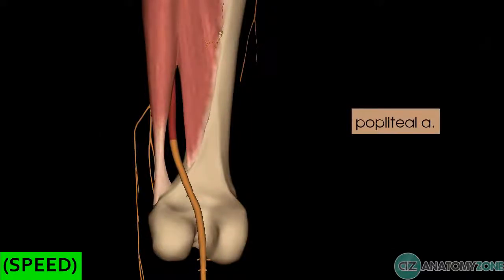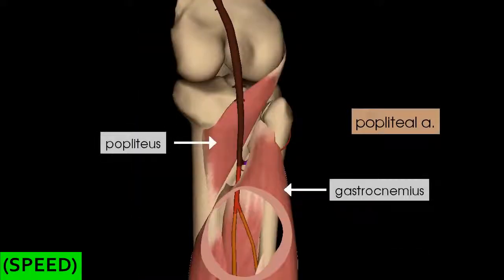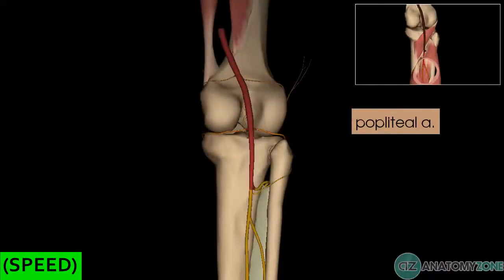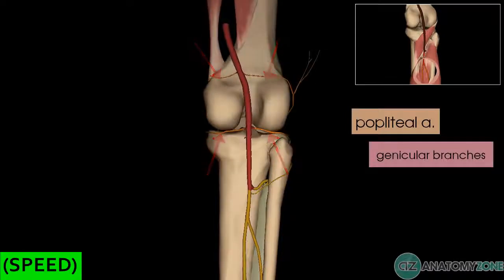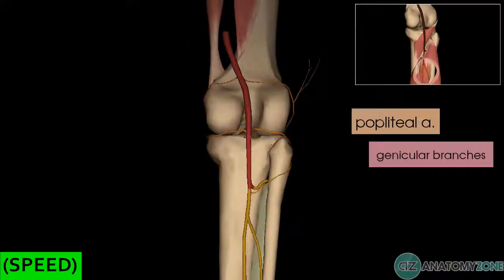The popliteal artery passes between the gastrocnemius and the popliteus muscles. It gives off genicular branches which supply the knee joint, and it then divides into the anterior and posterior tibial arteries.